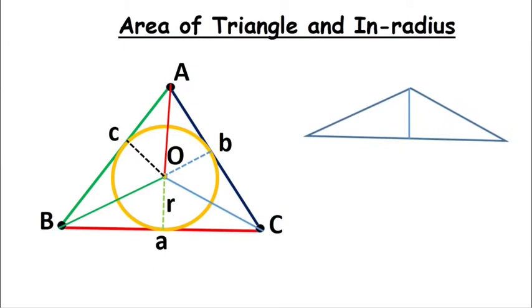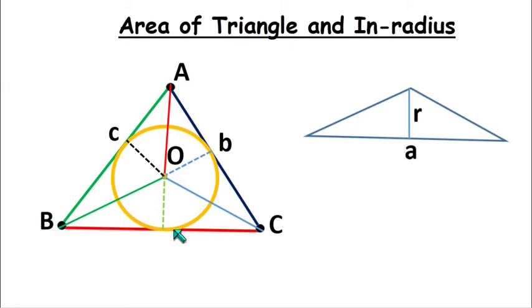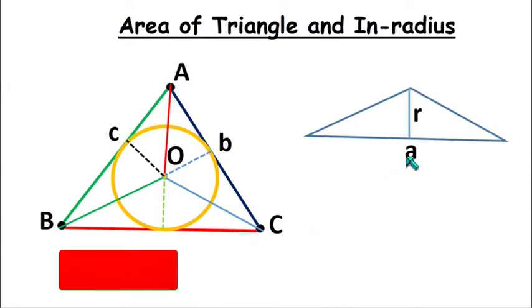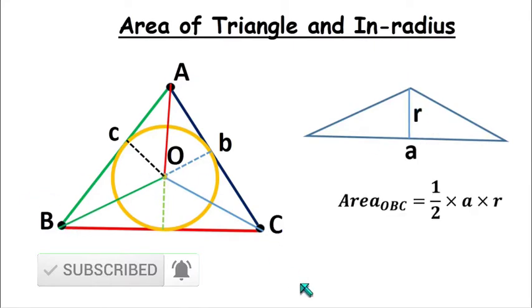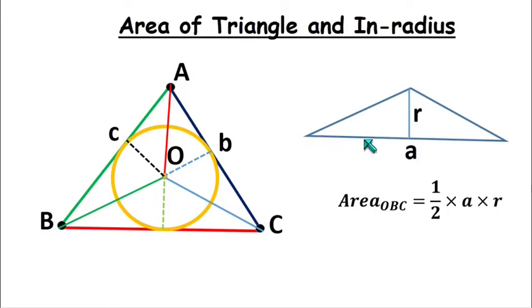Consider the small triangle OBC, where the height is the in-radius r and the base is the side length a. The area of triangle OBC equals half times a times r — that is, half base times height.